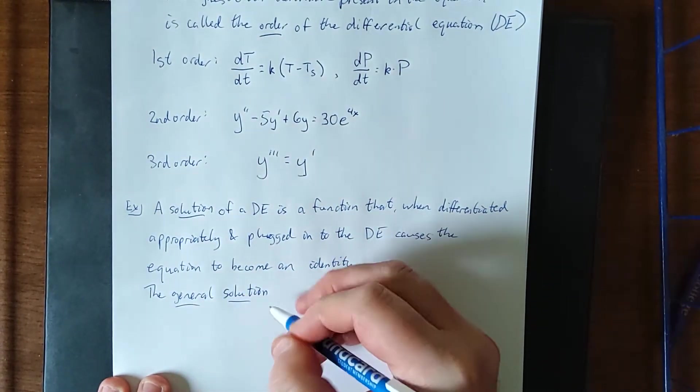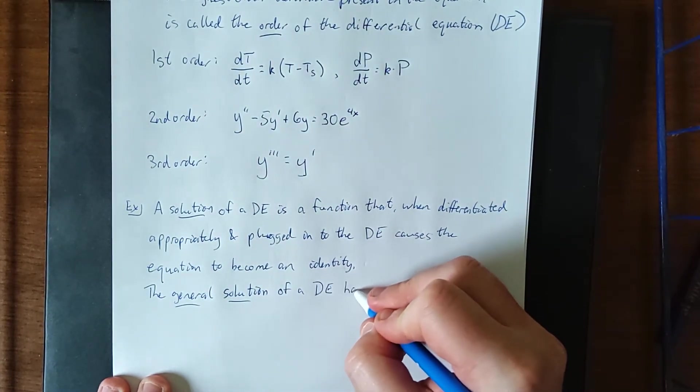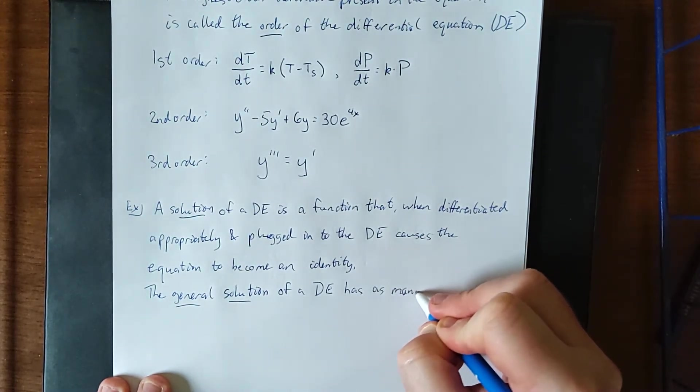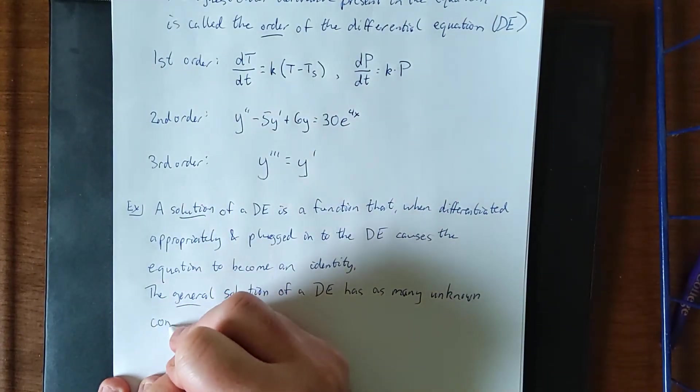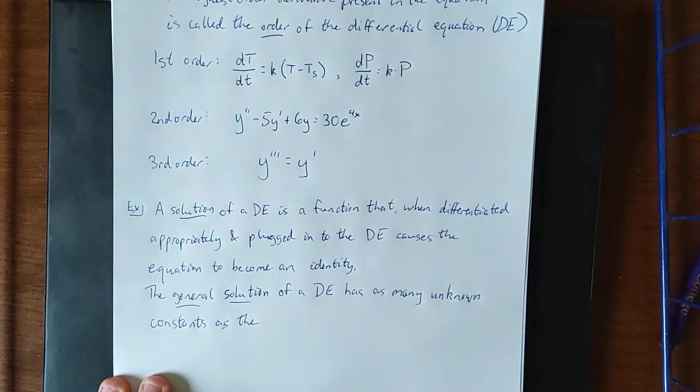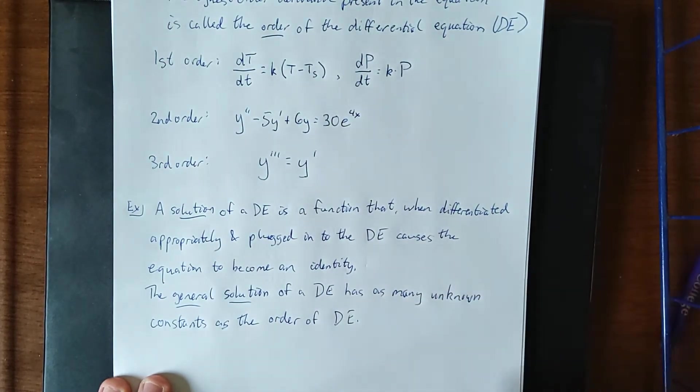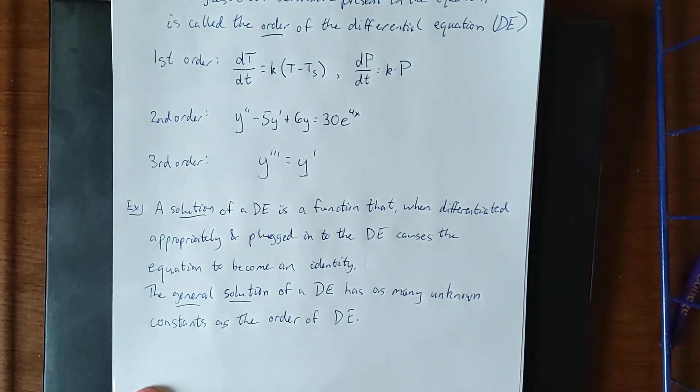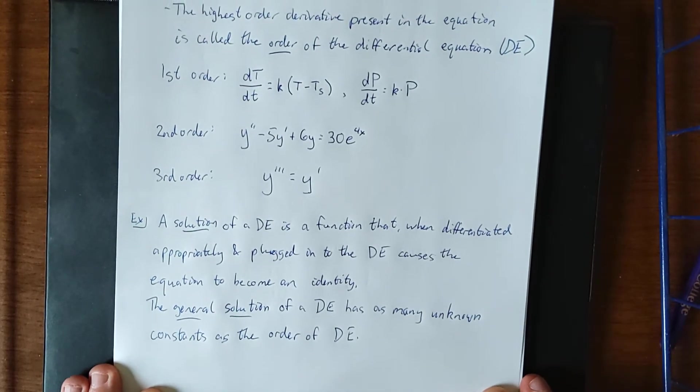The general solution of a differential equation has as many unknown constants as the order of the differential equation. Now we're not going to prove it right this moment, but I think that at the very least, a demonstration of what this actually means is in order.